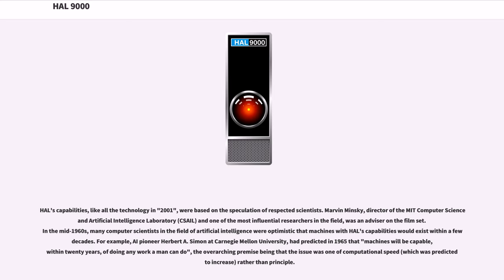HAL's capabilities, like all the technology in 2001, were based on the speculation of respected scientists. Marvin Minsky, director of the MIT Computer Science and Artificial Intelligence Laboratory, CSAIL, and one of the most influential researchers in the field, was an advisor on the film set. In the mid-1960s, many computer scientists in the field of artificial intelligence were optimistic that machines with HAL's capabilities would exist within a few decades. For example, AI pioneer Herbert A. Simon at Carnegie Mellon University had predicted in 1965 that machines will be capable, within 20 years, of doing any work a man can do — the overarching premise being that the issue was one of computational speed, which was predicted to increase, rather than principle.